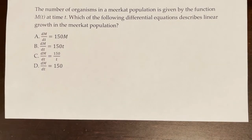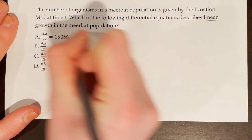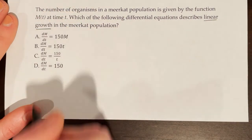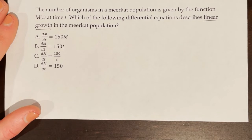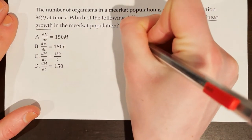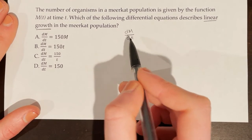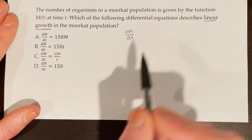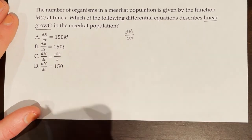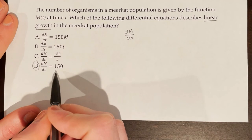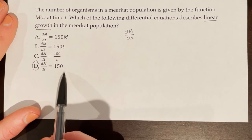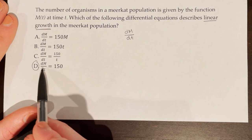The number of organisms in a meerkat population is given by the function m of t at time t. Which of the following differential equations describes linear growth in the meerkat population? If something is growing linearly, it is growing at a constant rate. Therefore, the rate dm/dt must be constant. Looking through the options, dm/dt equals 150 — that is choice D — and this models linear growth in the meerkat population because the rate is constant.